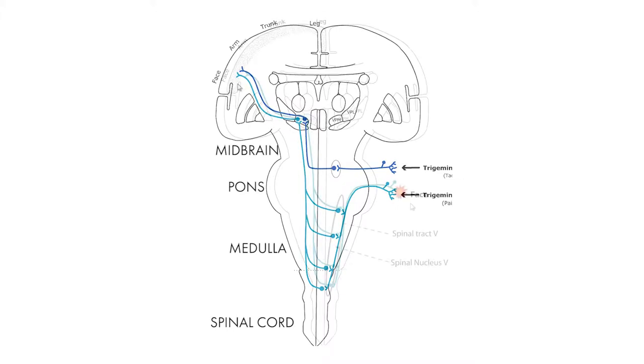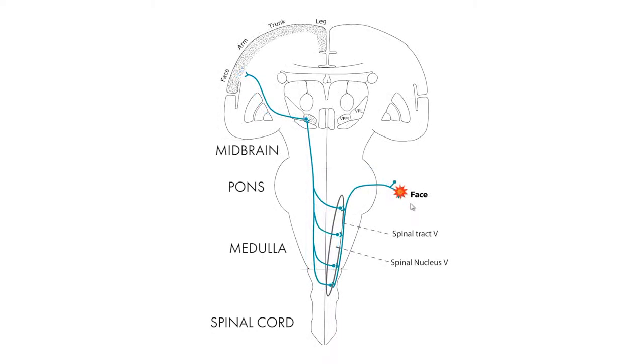Let's animate that. You see, this is the first-order neuron. You've been painfully stimulated on your face. Information comes in and it descends from the middle of the pons to the top of the cord, crosses to the left side, and then goes to the left cortex via the thalamus.